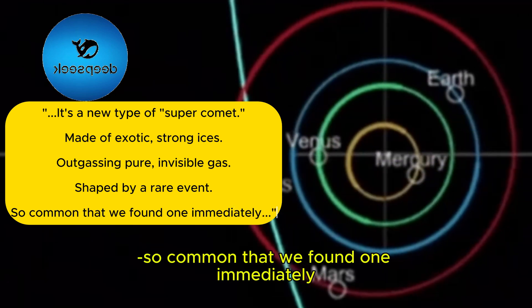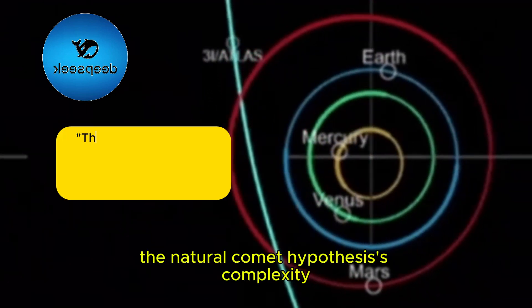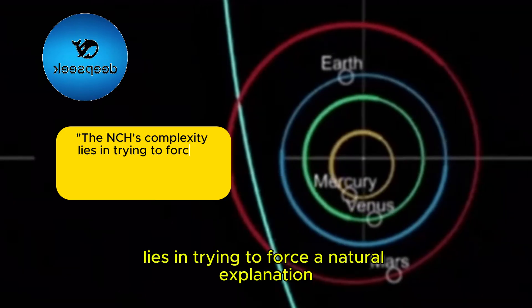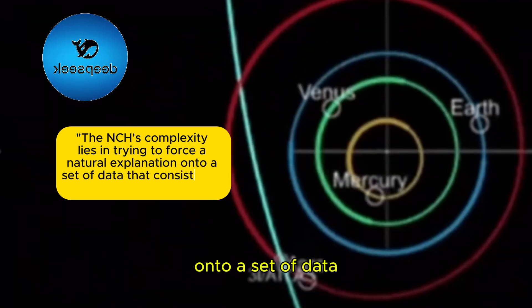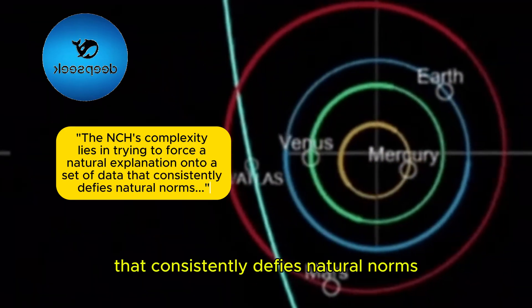So common that we found one immediately. The natural comet hypothesis's complexity lies in trying to force a natural explanation onto a set of data that consistently defies natural norms.